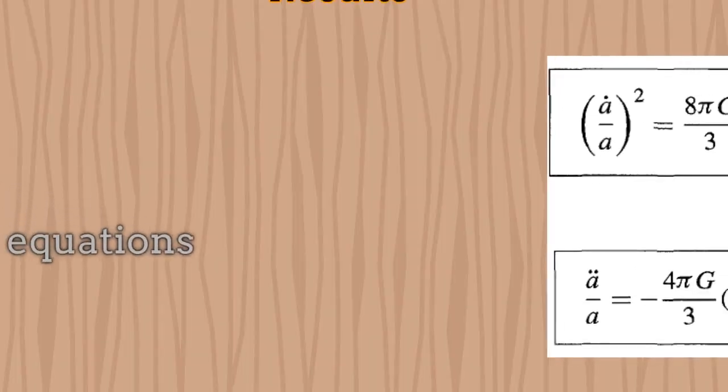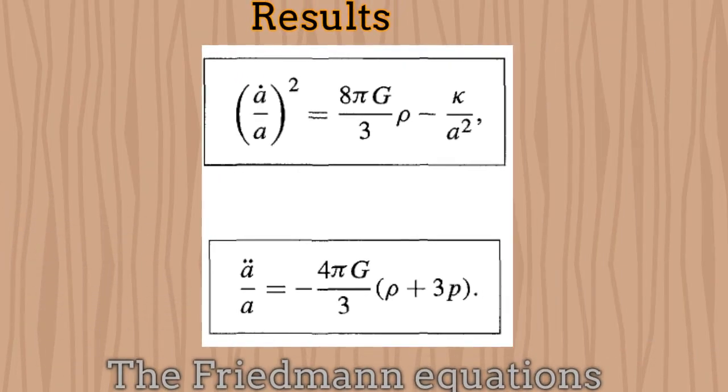By introducing the Robertson-Walker metric inside the Einstein equations, we then obtain the Friedman equations, which are obtained from the two independent components of the Einstein equations, which are obtained after considering the homogeneity and isotropy of the universe at large scales.